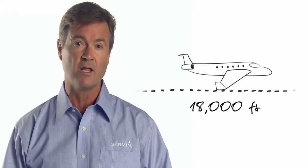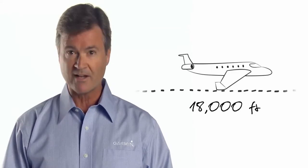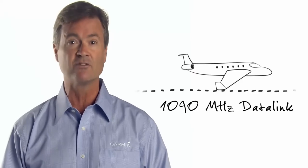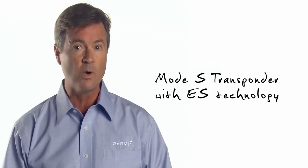For those of you who fly outside of the U.S. or within Class A airspace above 18,000 feet, you'll be required to broadcast this position information over the 1090 MHz data link. This is done with a Mode-S transponder that's equipped with extended squitter, or ES, technology.